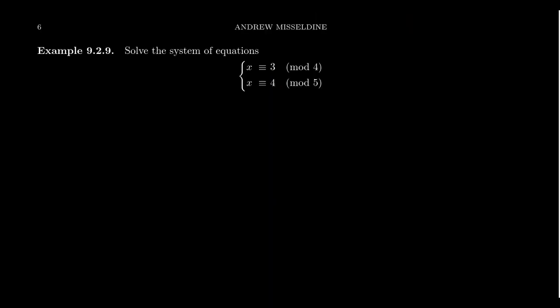In number theory one can generalize this further to cases where the GCD conditions aren't met, discussing when solutions exist and when there are multiple. This lecture series is on algebra, not number theory, so we won't go into all those details — but let's show how to actually solve a system of linear congruences. We need to find a number which is congruent to 3 mod 4 and congruent to 4 mod 5.